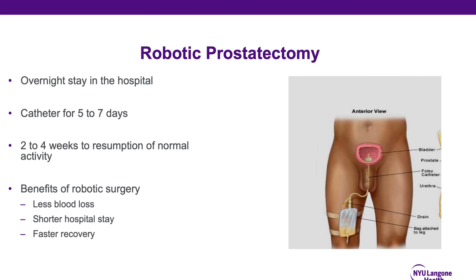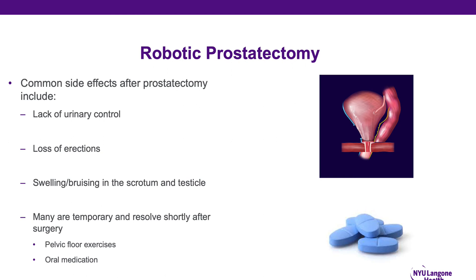Most men are able to resume normal physical activity within two to four weeks of surgery. The benefits of robotic prostatectomy over traditional open prostatectomy include less blood loss, shorter hospital stay, and faster recovery. It is important to note some common side effects after prostatectomy, which may include temporary lack of urinary control and loss of erections. In addition, some men develop swelling or bruising in the scrotum and testicles following the surgery. Many of these side effects are temporary and resolved shortly after surgery. This is expedited through the use of pelvic floor exercises, in which a man can strengthen his pelvic floor and regain continence and urinary control, as well as the use of oral medications to accelerate the return of erections following radical prostatectomy.